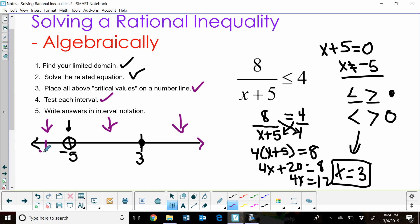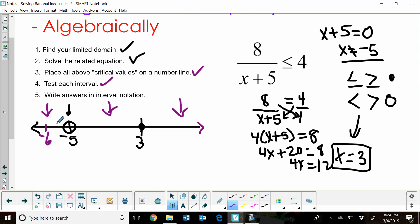So let's pick a number over here to the left. I'm just going to pick negative 6. You can pick negative 10 or negative 100, any value to the left of negative 5. I'm going to plug in negative 6. So I'm going to test that point. 8 over negative 6 plus 5, so negative 6 plus 5 is negative 1. I'm going to see if that is less than or equal to 4.